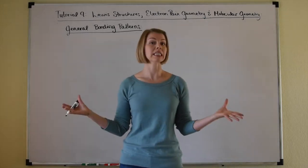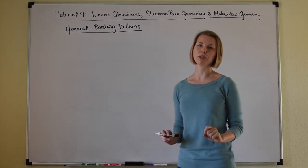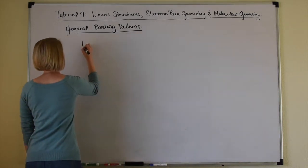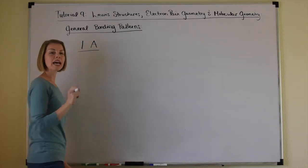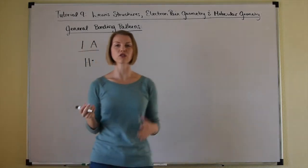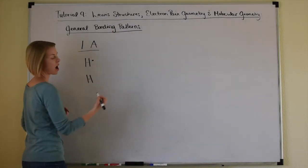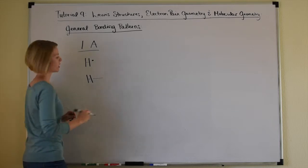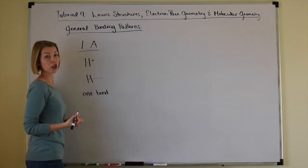There are many other exceptions to the octet rule, mostly expanding octets, but we are not going to consider those in this tutorial. The only non-metal in group 1A is hydrogen, which has just one valence electron. When it forms a covalent bond, hydrogen will always form just one bond to another atom — one bond, no lone pairs of electrons.